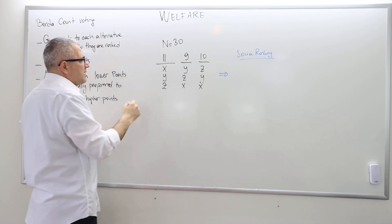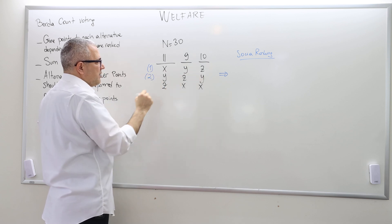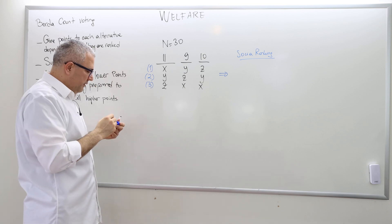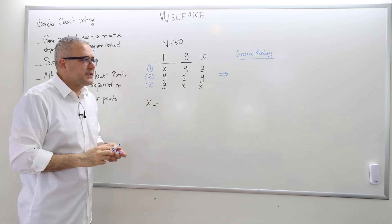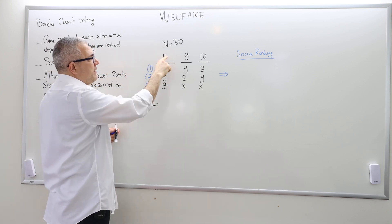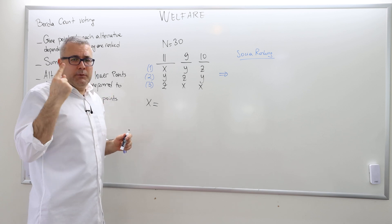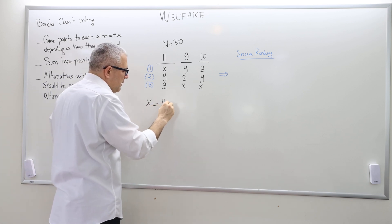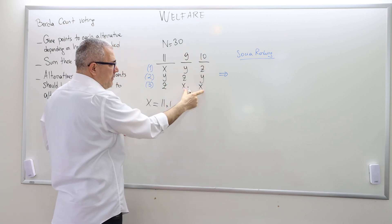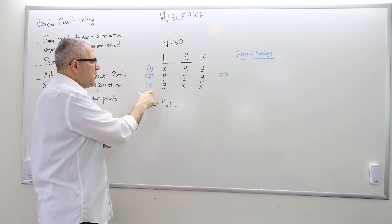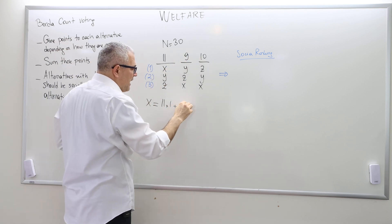The question is: what is the social ranking between these three alternatives according to Borda count voting? We give one point to the first ranked alternative, two points to the second ranked, and three points to the last. So how many points does X collect? Eleven agents ranked X first, so X receives one point eleven times.